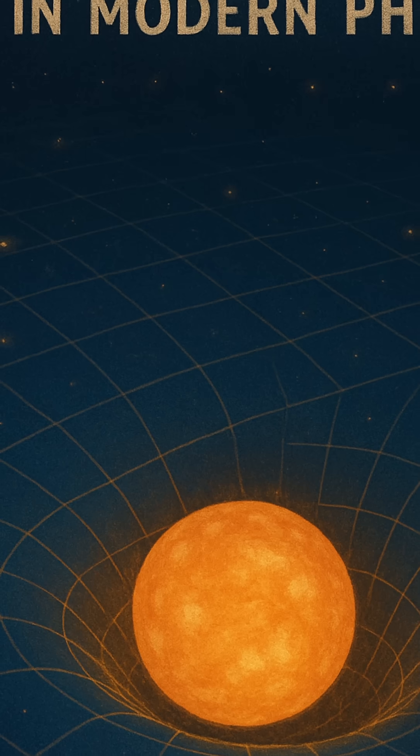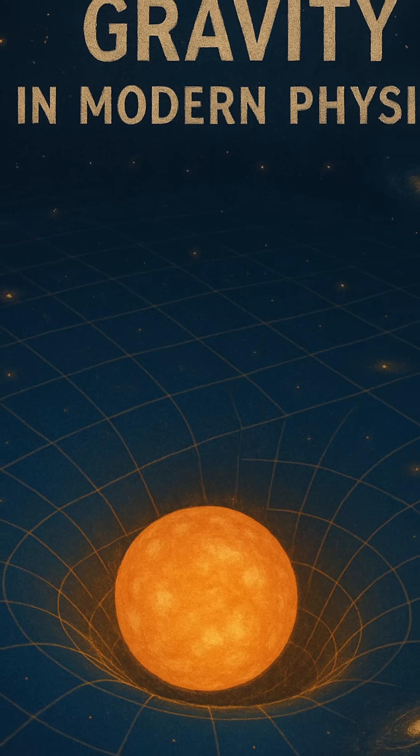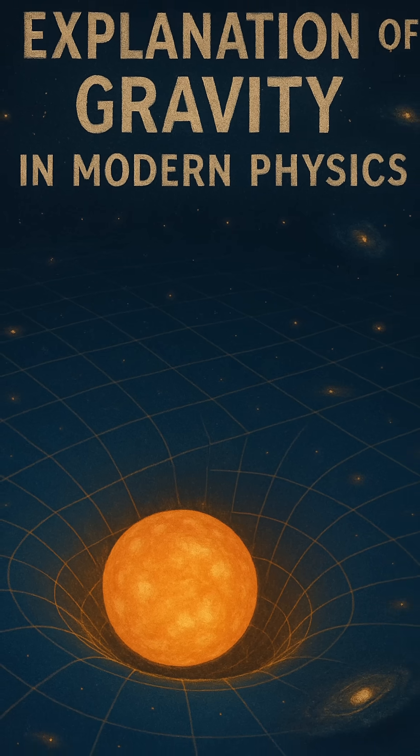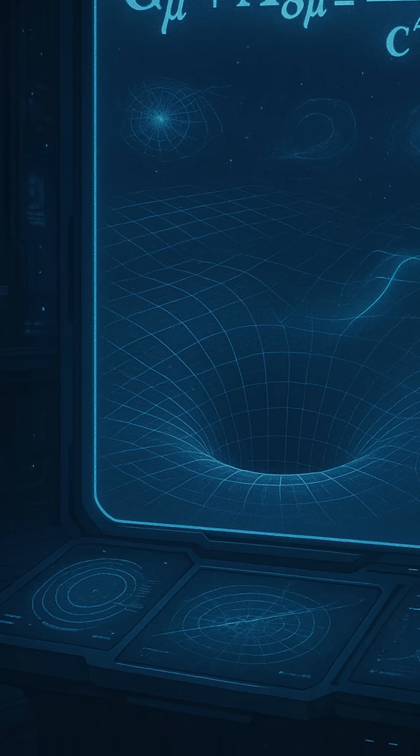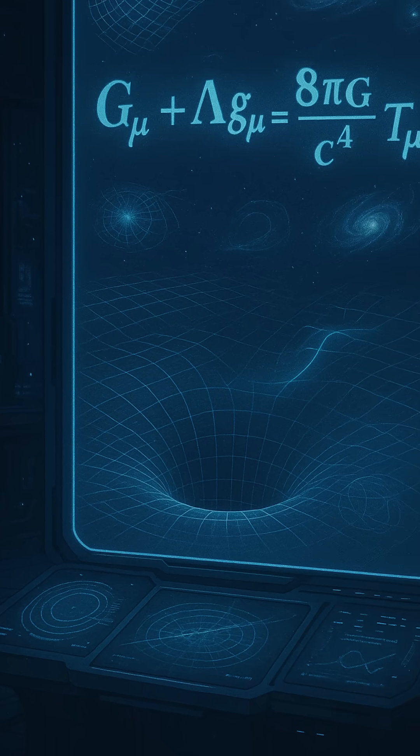Imagine spacetime as a vast, flexible fabric. When massive objects like stars or planets are placed on this fabric, they create denser curves. Smaller objects moving nearby follow these curves, not because they're being pulled by a force, but because the geometry of space itself has changed.